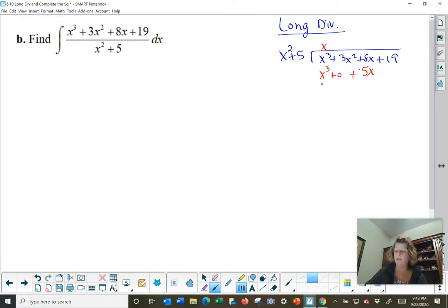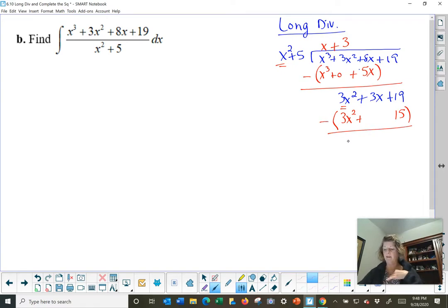Multiply it out. We get x cubed and a 5x. Find the appropriate column to put that in. That is a positive. So I really have 0 for x squared, right? We're going to subtract all that. That will get me a 0, a 3x squared. 8 minus 5 is 3x. And then I can bring down the 19. Now, will x squared go into 3x squared? Of course it will. 3 times. Go into multiplication. That's going to give me a 3x squared plus 15 in the appropriate column. In the number column. Subtracting. That gives me a 0. 3x minus 0 gives me 3x. 19 minus 15 is positive 4.